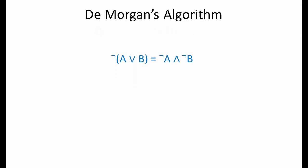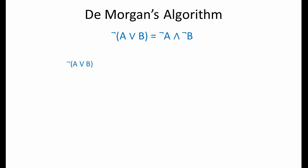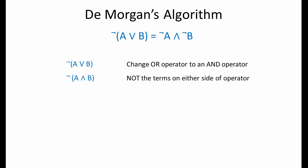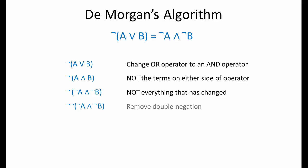By looking at this part of the theorem, we can derive a set of steps — an algorithm — to convert the term on one side of the equation into the term on the other side. To get from the left-hand side to the right, we must first swap the OR for an AND. Then we NOT the terms that the operator was operating on, that is, the terms on either side of it. Then we NOT everything that has changed. Finally, we can cancel out any double negation. The two NOTs become NO NOT AT ALL. Removing the unnecessary brackets gives us the expression we're looking for.